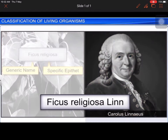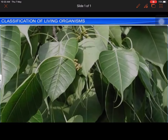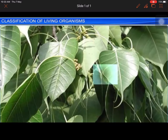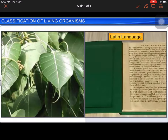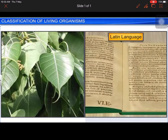Sometimes the name of the author who first described the species is written at the end of the specific epithet. For example, in Ficus religiosa Linn., 'Linn.' is the abbreviated name for Linnaeus. Moreover, scientific or biological names are generally in Latin or derived from Latin, irrespective of the origin of the organism.